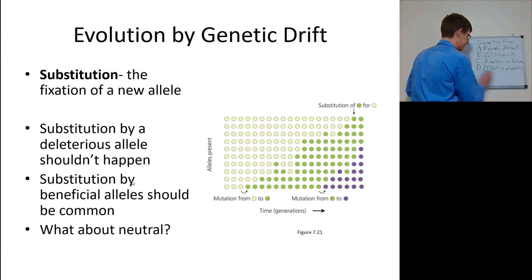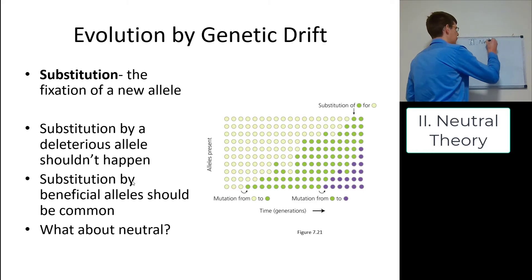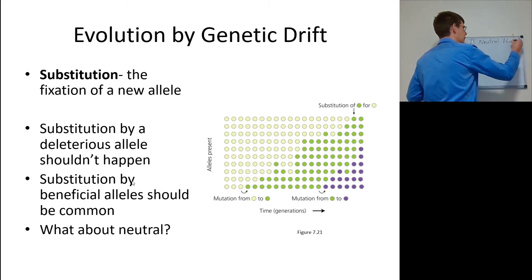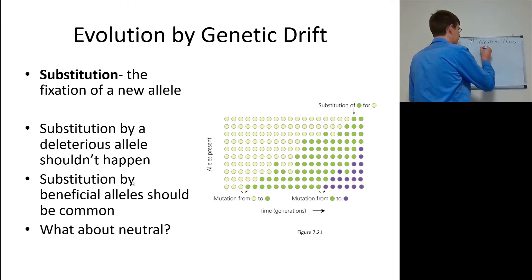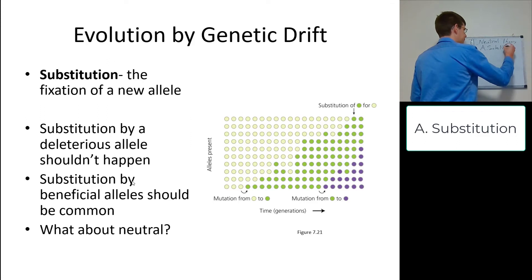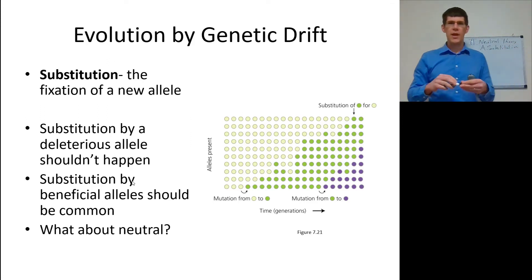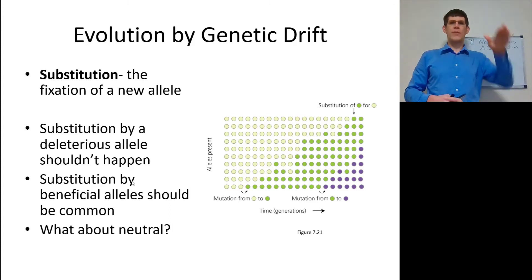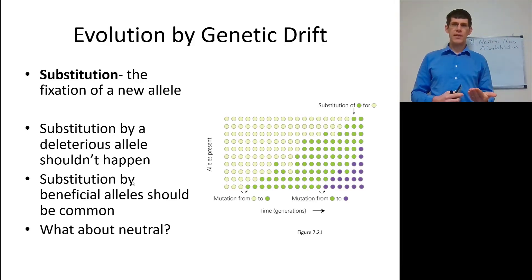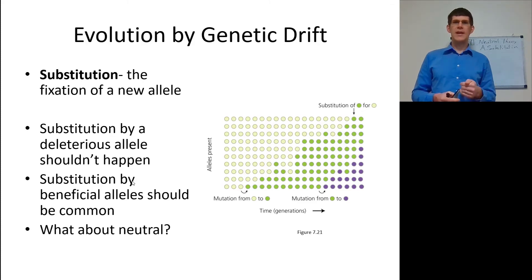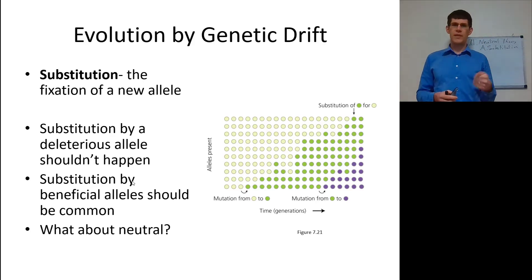Let's go to neutral theory. Neutral theory talks a lot about neutral alleles. Let's look at substitution — when one allele substitutes another. In a population where a mutation occurs, say from yellow to green, that green allele could randomly drift out. However, it could also become more frequent and substitute the yellow allele when the green allele goes to fixation — that's a substitution event. A mutation from green to purple may also go to fixation, substituting the green.